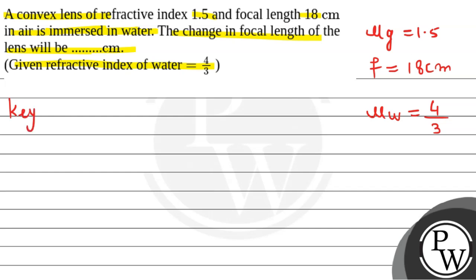We will start with the solution. But before that, let's talk about the key concept we are going to use here. 1/f = (mu_effective - 1)(1/R1 - 1/R2), where R1 and R2 are the radius of curvature for either side of the lens.